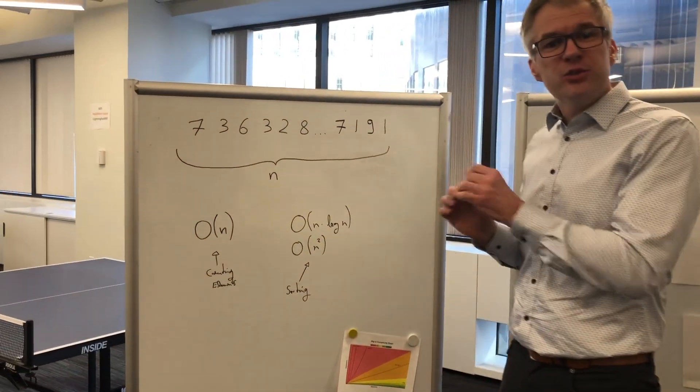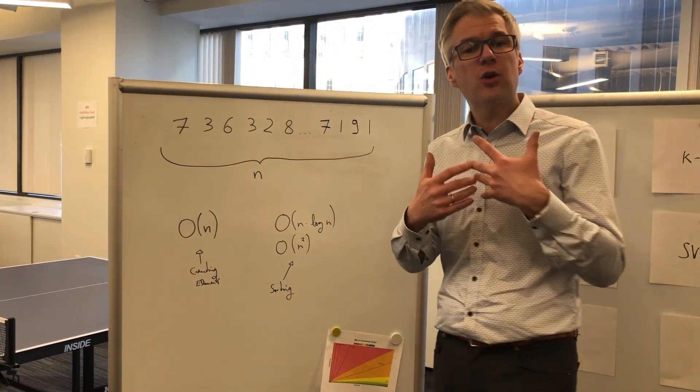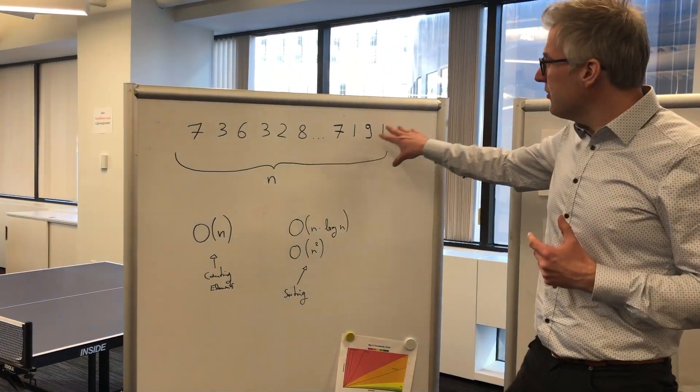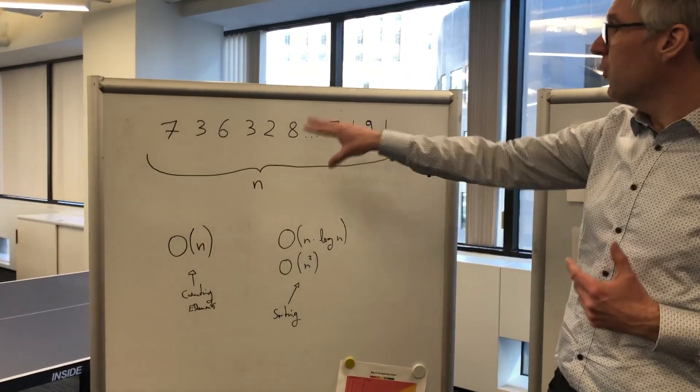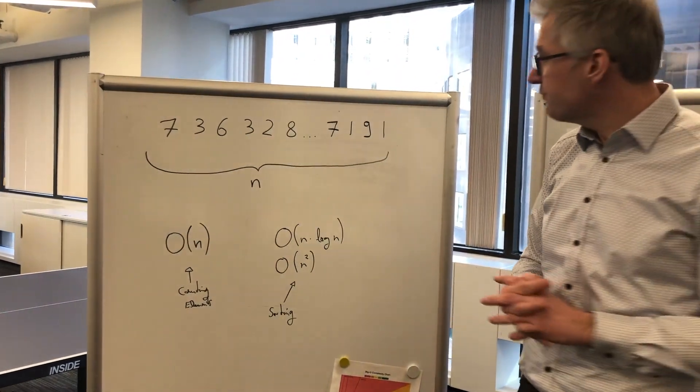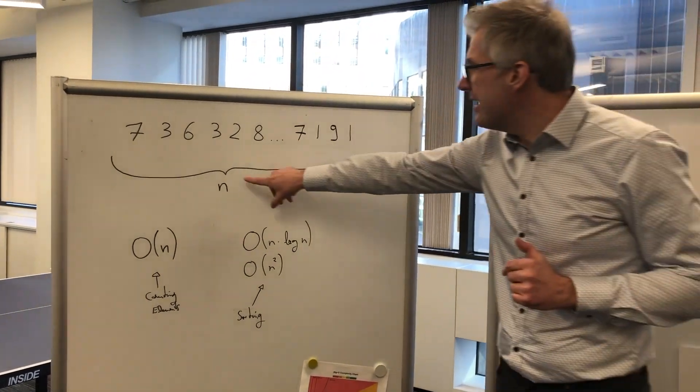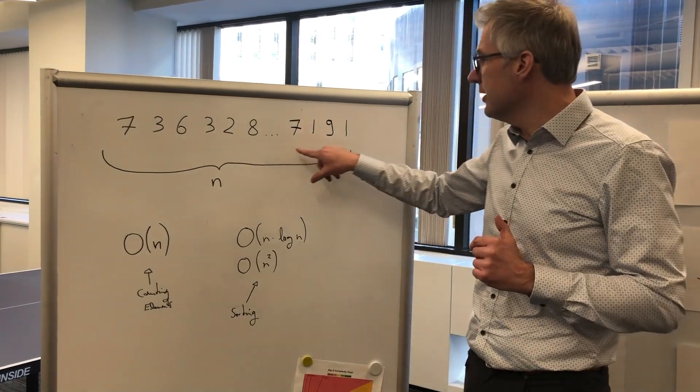But before we get there, let me introduce something to you we computer scientists call Big O notation. Here's a simple example. I have a bunch of numbers here: 7, 3, 6, 3, 2, and so on. I actually do know how many numbers I have. I have n numbers in total here.